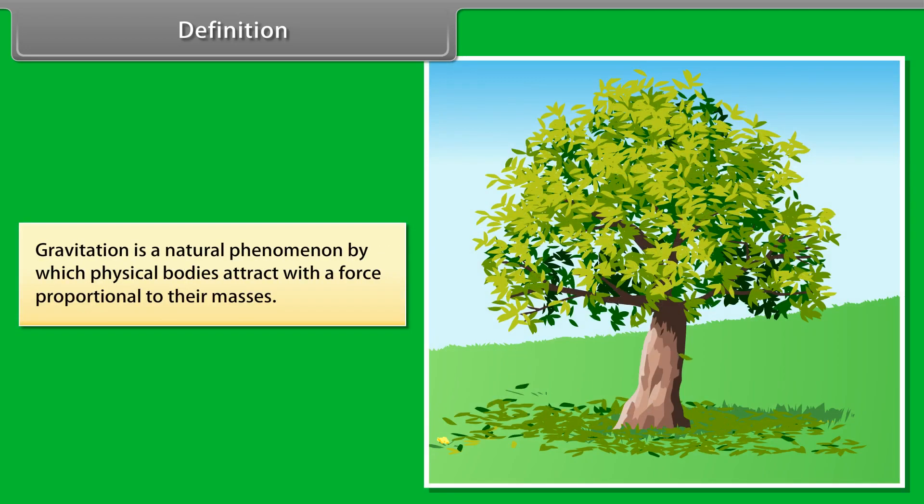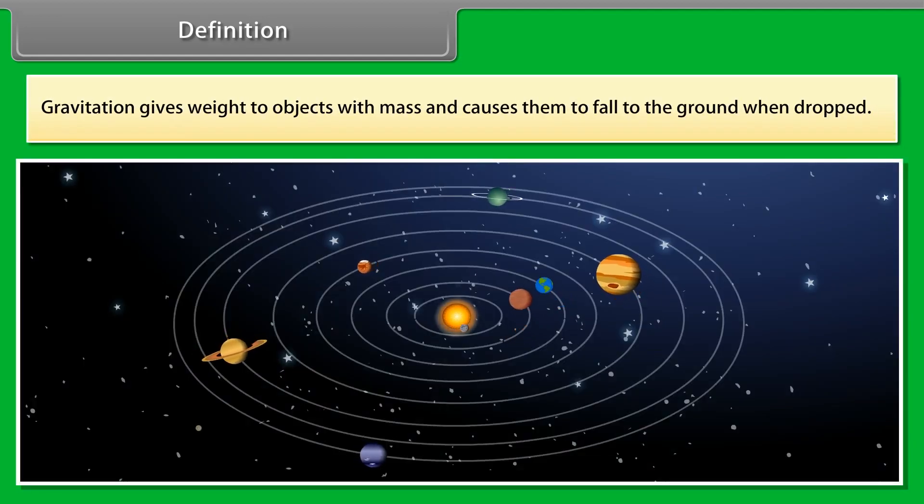Gravitation is a natural phenomenon by which physical bodies attract with a force proportional to their masses. Gravitation is most familiar as the agent that gives weight to objects with mass and causes them to fall to the ground when dropped.